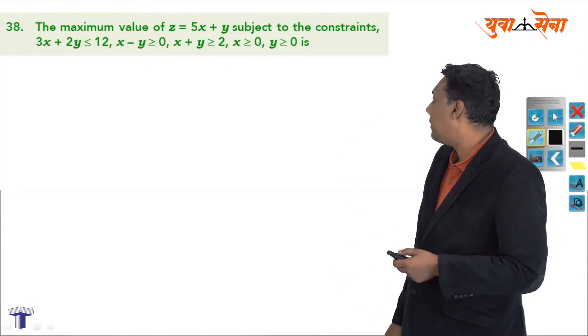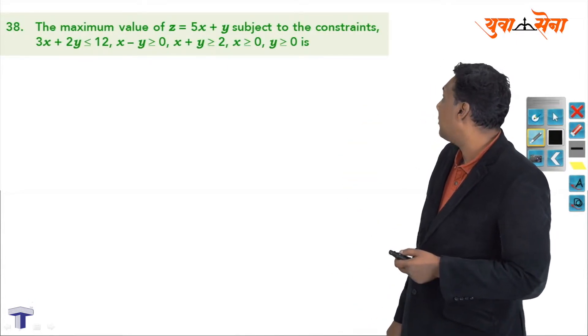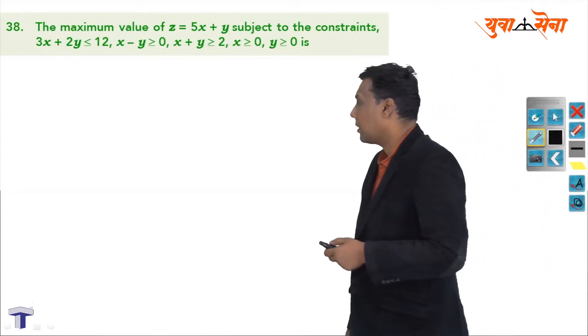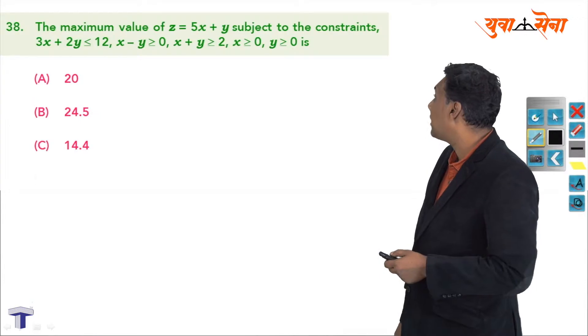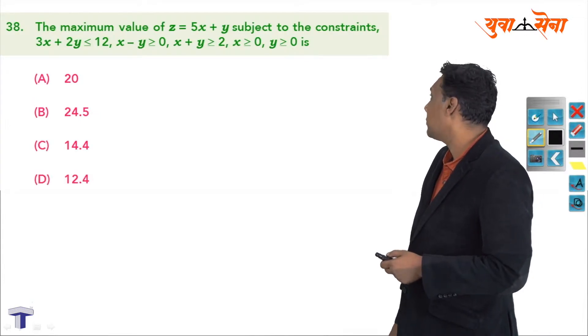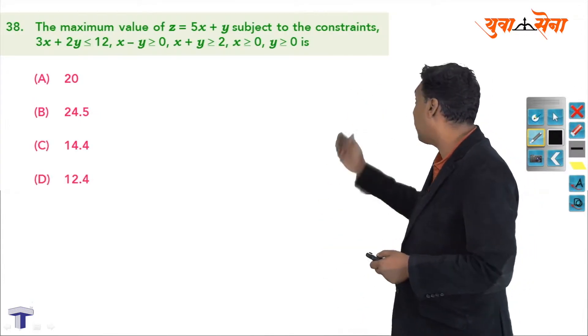LPB. Maximum value of z equal to 5x plus y subject to the constraints given: 3x plus 2y less than equal to 12, x minus y greater than equal to 0, x plus y greater than equal to 2, x greater than 0, y greater than 0, first quadrant.